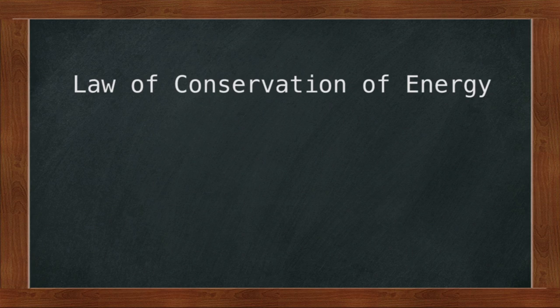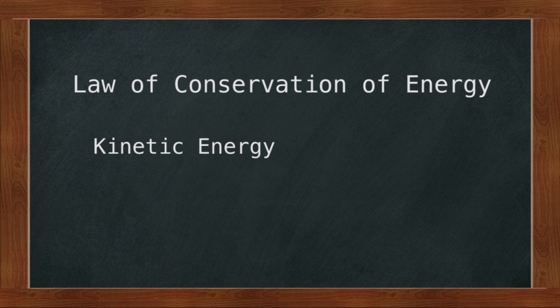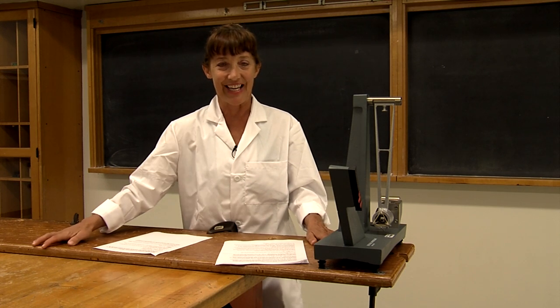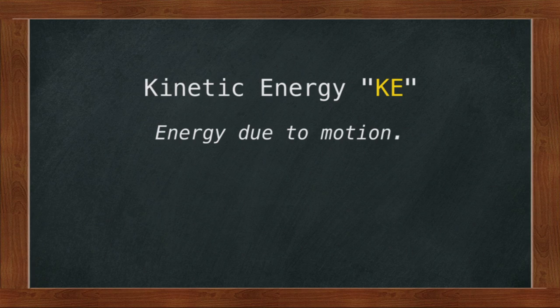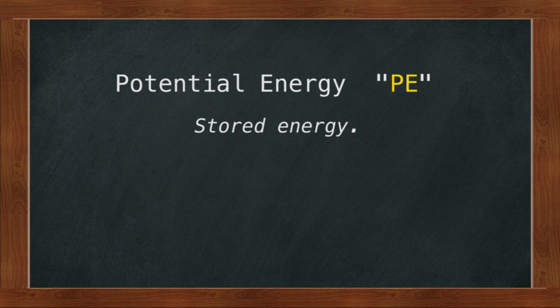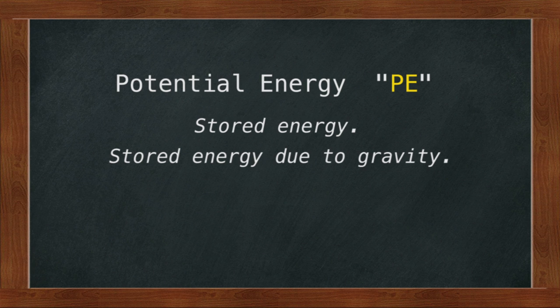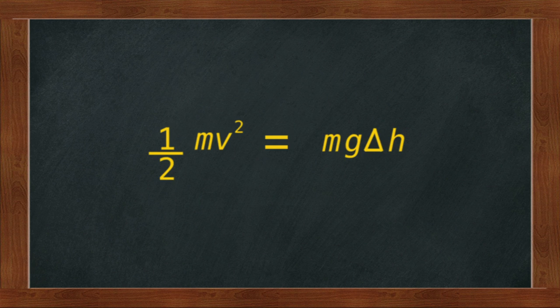We will use conservation of energy to solve for v_c. In this experiment we will use kinetic energy and potential energy. Kinetic energy is energy due to motion, mathematically defined as one-half times mass times velocity squared. Potential energy is stored energy — in our case, energy stored due to gravity, defined as mass times g times delta h. The kinetic energy of the system will translate into potential energy as the system rises, giving us: ½mv² = mgΔh.